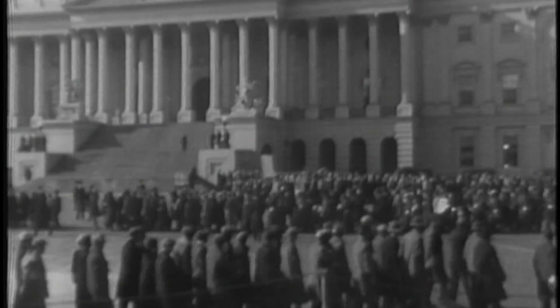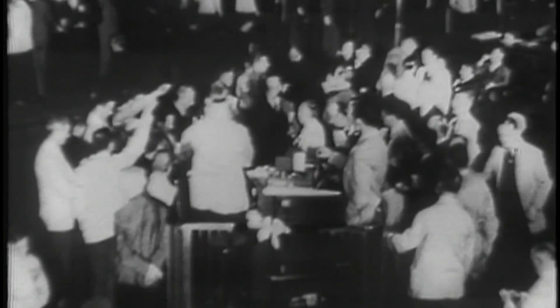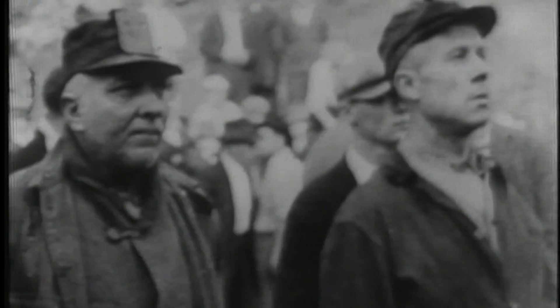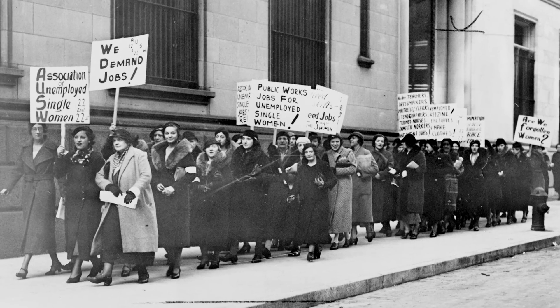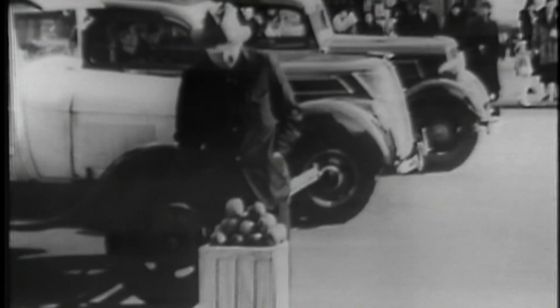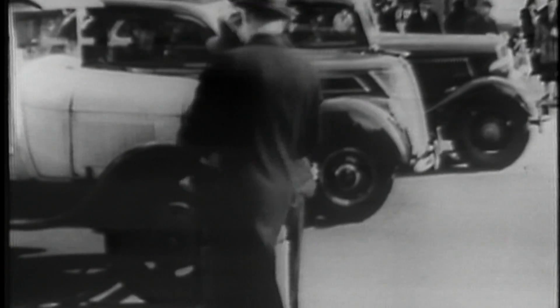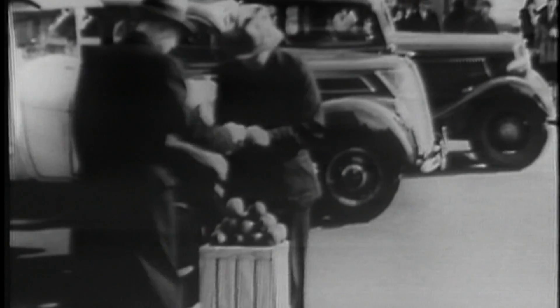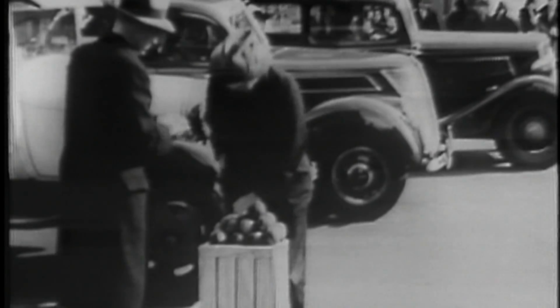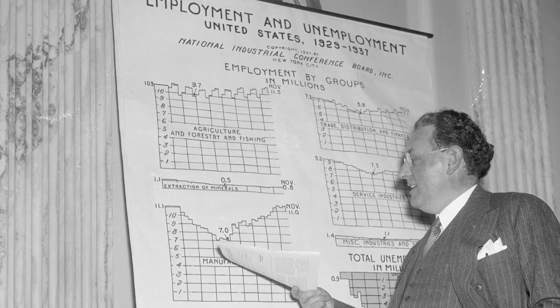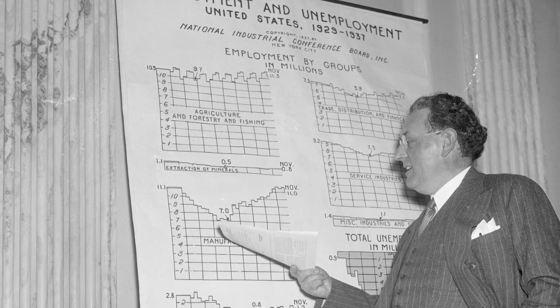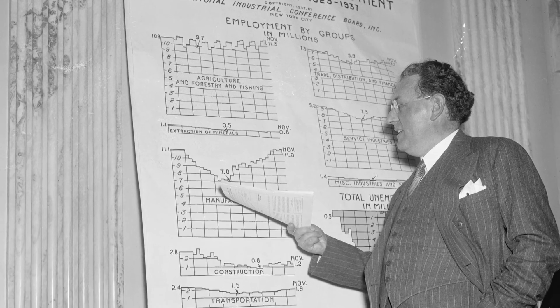For instance, deflation happened during the Great Depression. There was less demand, so prices fell across the economy, businesses' inventories grew, people were laid off, unemployment rose and incomes fell. Also, people waited to buy things because they expected prices to be even lower in the future. So firms produced even less and laid off more workers. The cycle continued.